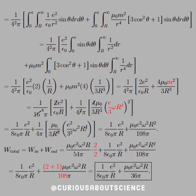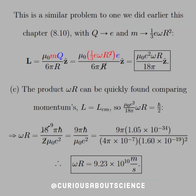The total energy is W_in plus W_out. Finding a common denominator and combining the magnetic field components — multiplying by 2 over 2 on the W_in part — gives us 3 over 108, which reduces to 1 over 36. So the E field contribution and the magnetic field contribution are separated. Although messy, it's really just a lot of bookkeeping. This is quite similar to question 8.10 with Q equal to E and M equal to 1 third E omega r squared, so the angular momentum equals mu-not MQ over 6 pi r, giving mu-not E squared omega r over 18 pi in the z-hat direction.